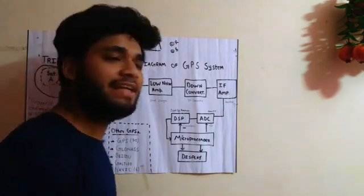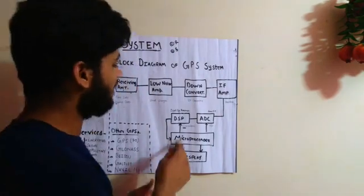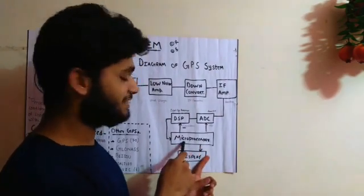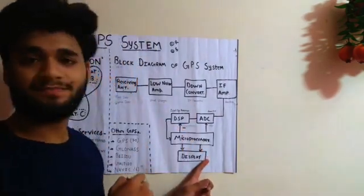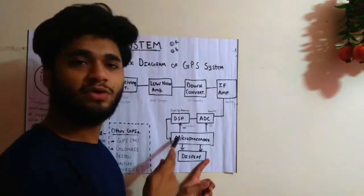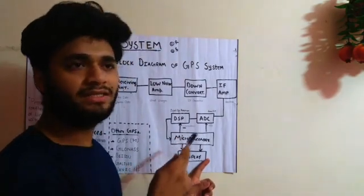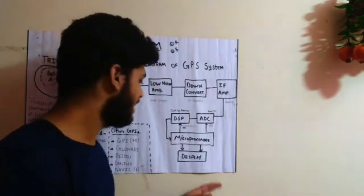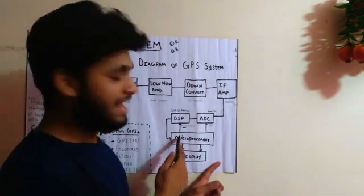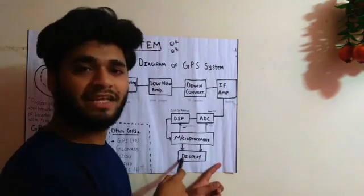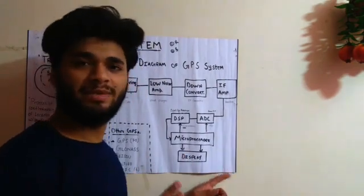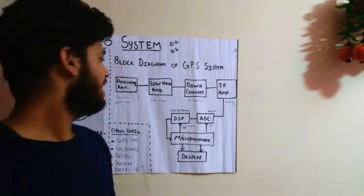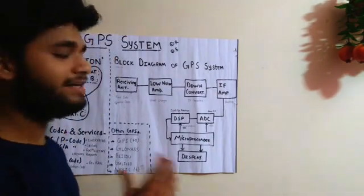After extracting the codes, the whole information is sent to the microprocessor. The microprocessor is the core of this system because all calculations about position, location, and time are performed here. It checks the signal and sends it to the display if it is found to be valid for display. In this way, the whole GPS system works between the receiving antenna and the screen display.